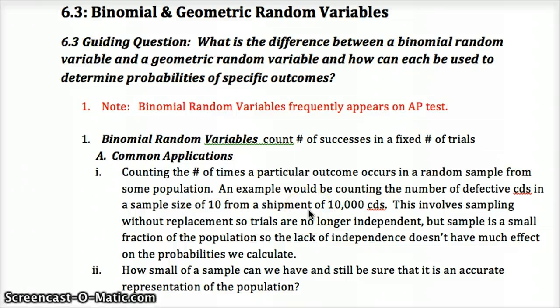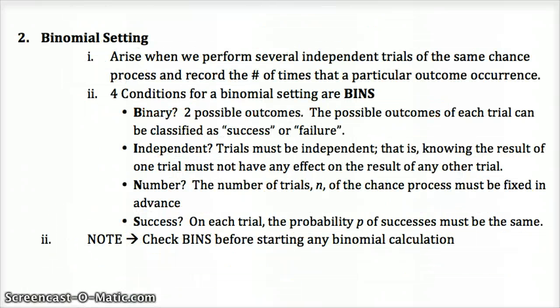Let's look at what we mean by a binomial random variable. There's four conditions for the binomial setting. Remember bins, B-I-N-S, add an S to that, bin setting, binomial setting. Binary, B-I meaning two possible outcomes, so either success or failure, and we would define what success is in the certain scenario.